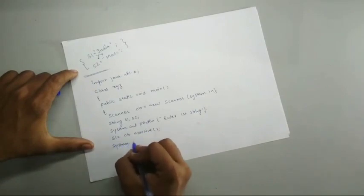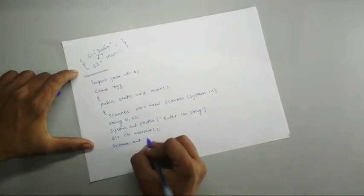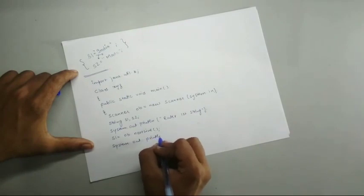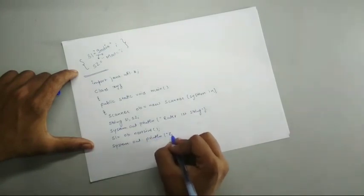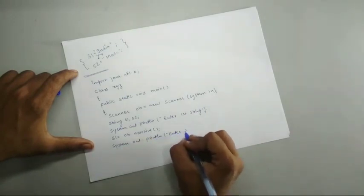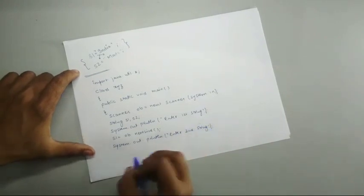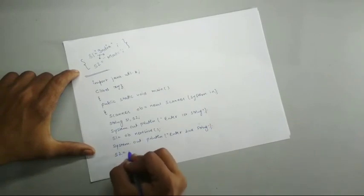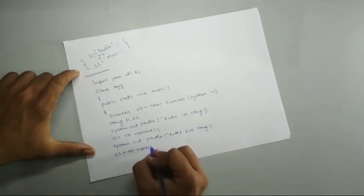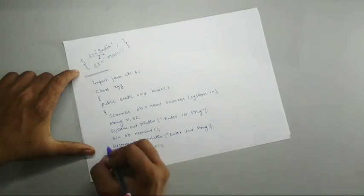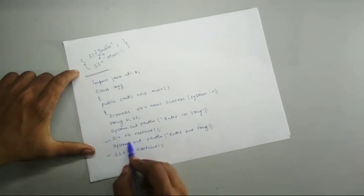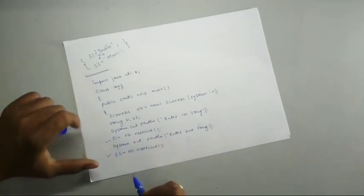Then we will give the second message, that is system dot out dot print ln, enter second string. That is s2 is equal to ob dot next line. Actually we have accepted two strings, first s1 is for the first string and s2 is for the second string.